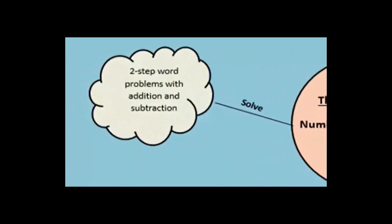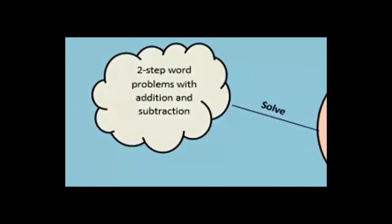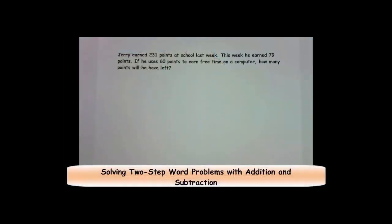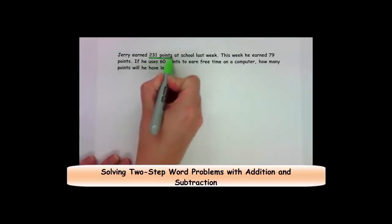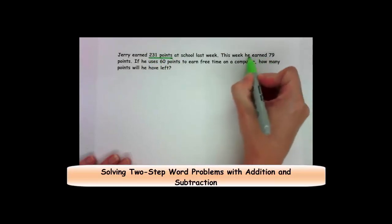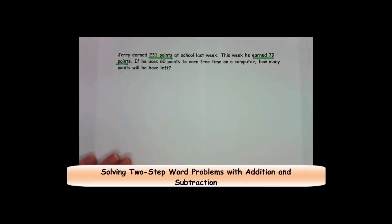The last area on the concept map is solving two-step word problems using addition and subtraction strategies. Here we have a word problem. Jerry earned 231 points at school last week. This week, he earned 79 points. If he uses 60 points to earn free time on a computer, how many points will he have left? This is an example of a two-step word problem. So, let's take a look at what we know so far. Jerry earned 231 points last week. This week, he earned 79 points. Well, I need to find out the total number of points that he earned last week and this week. And to do that, I'm putting 231 points and 79 points together to find the total. When I do that, I am adding.